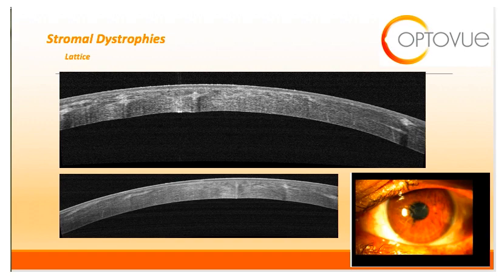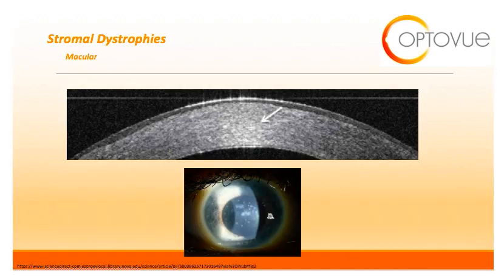Next is lattice dystrophy. Lattice appears clinically as refractile branching lines, white subepithelial dots, and can lead to eventual scarring of the corneal stroma centrally. On OCT, you can clearly see the linear hyper-reflective lines correlating with this dystrophy.